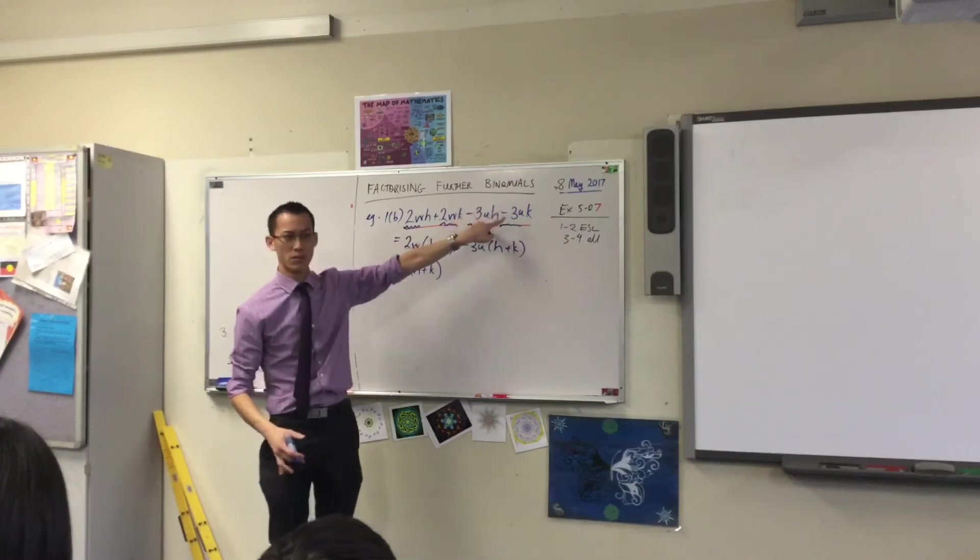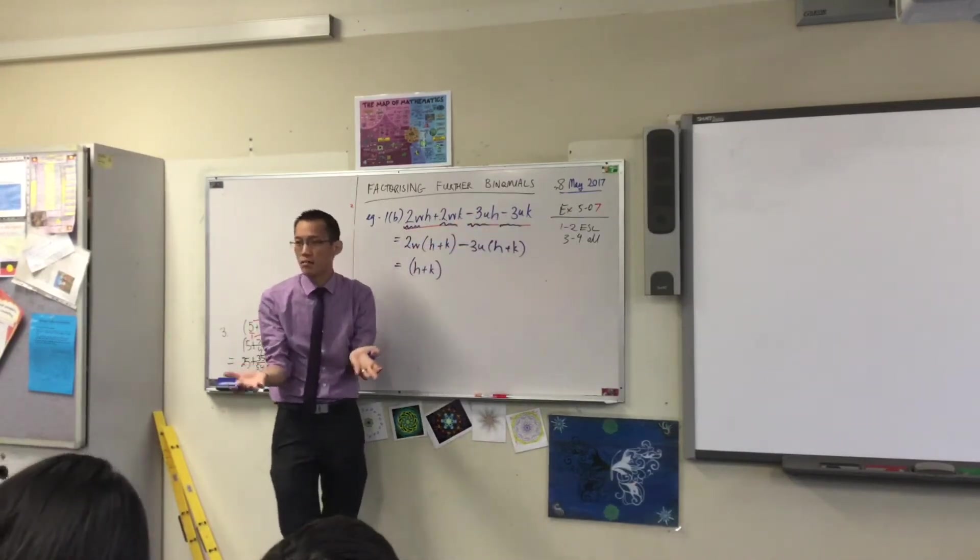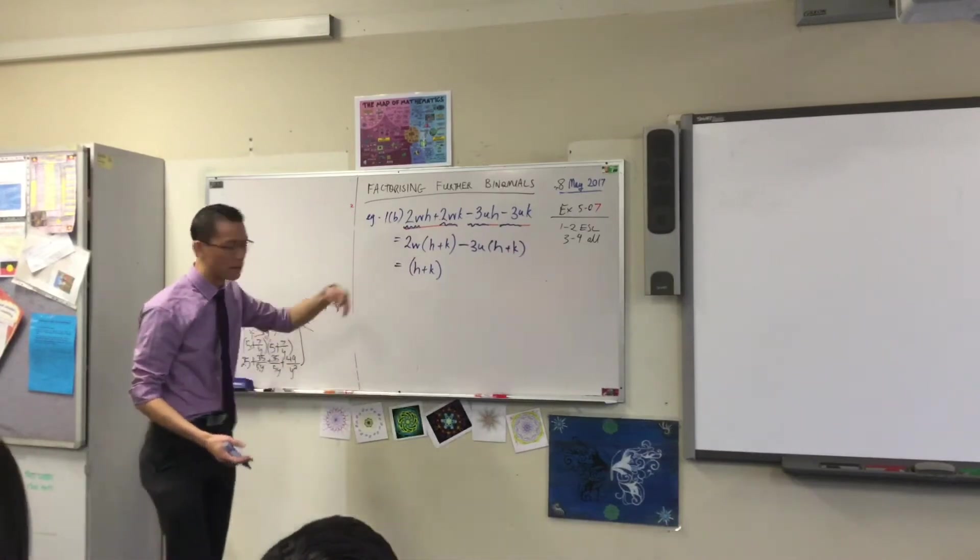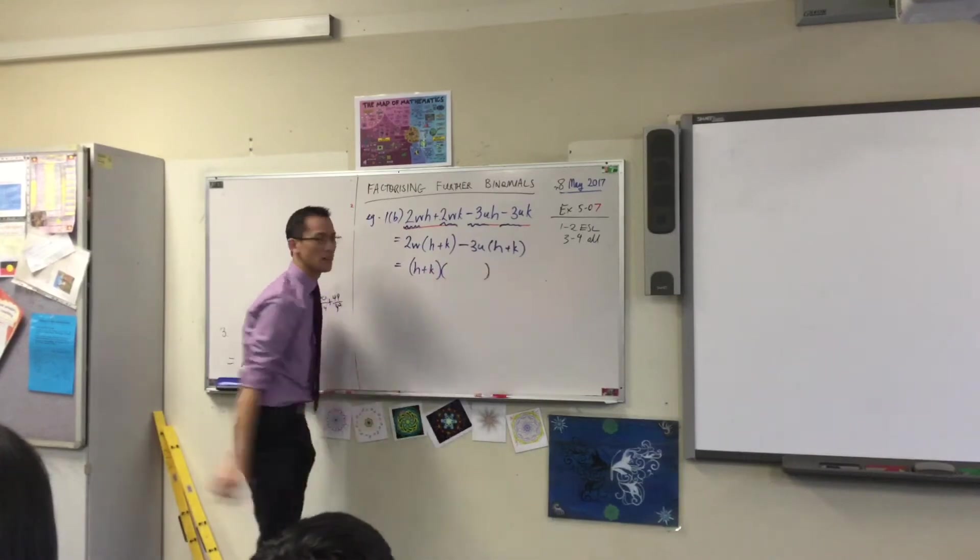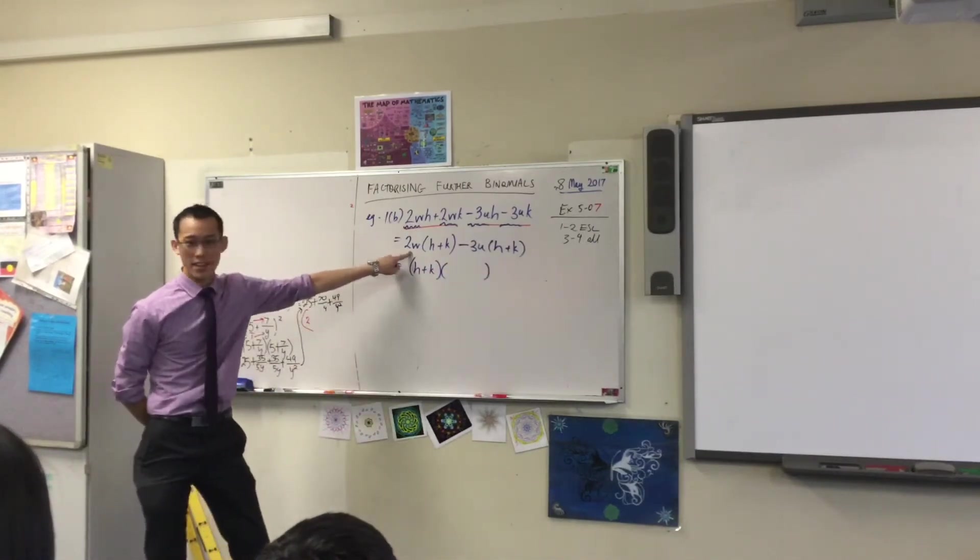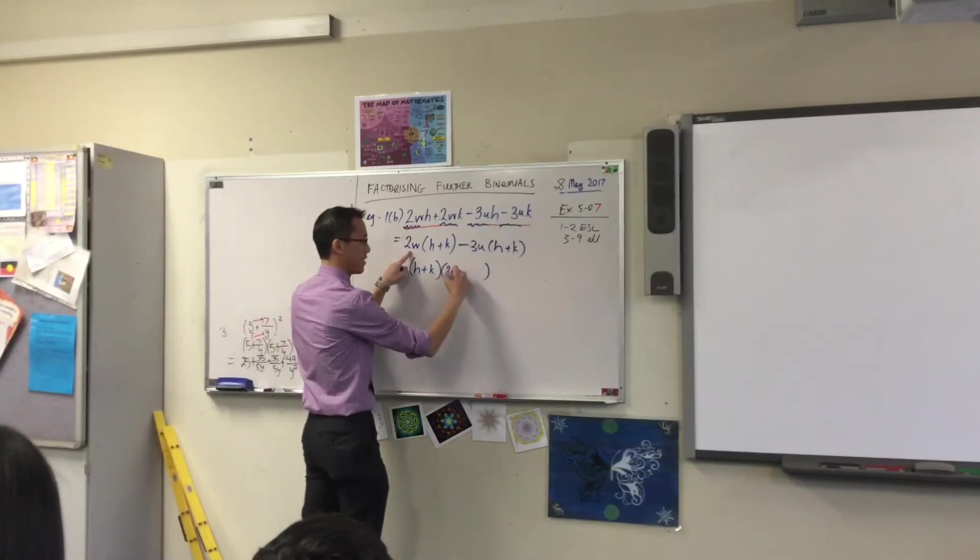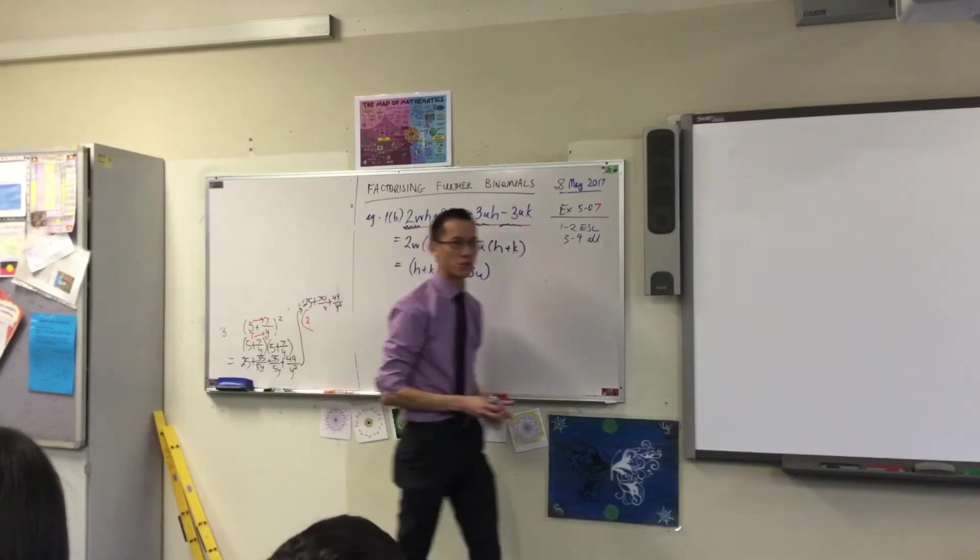It's in common just like the two Ws were in common, just like the minus three Us were in common. It's big and it's awkward, but it's a number. H is a number, K is a number, so you add it together. It just looks harder, but it isn't. When we take out the H plus K, what does it leave you with here? And watch out for the sign. Now you know you're done.